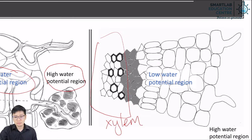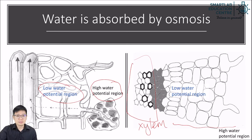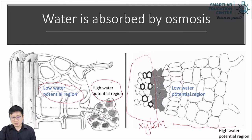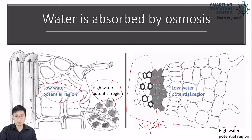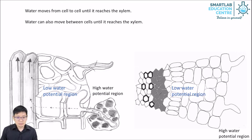Here, this shall represent the xylem, and then over here these are the root cells. So why is it that the plant's root cells have a low water potential compared to the soil around them? That we can discuss later on.